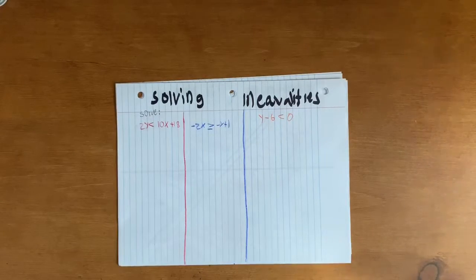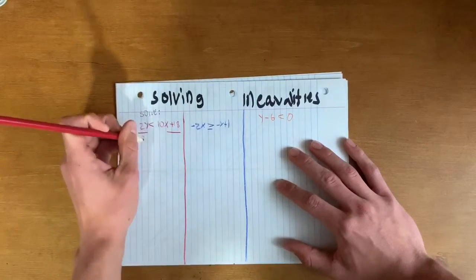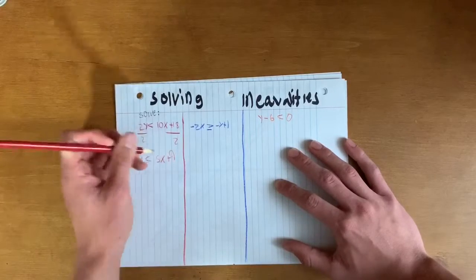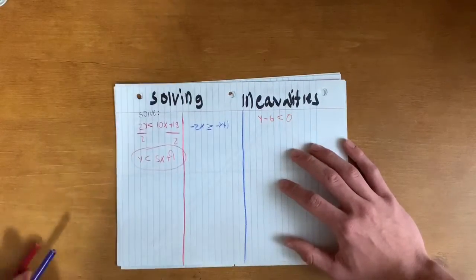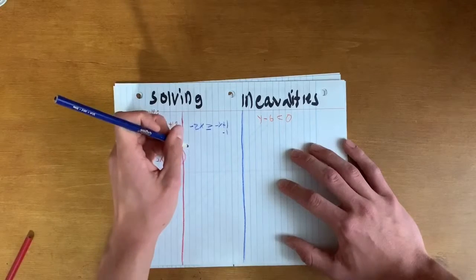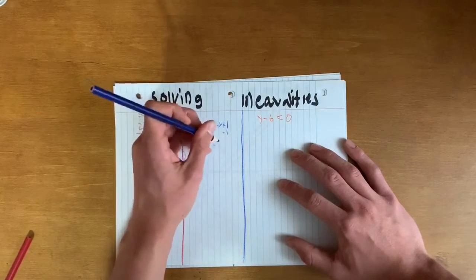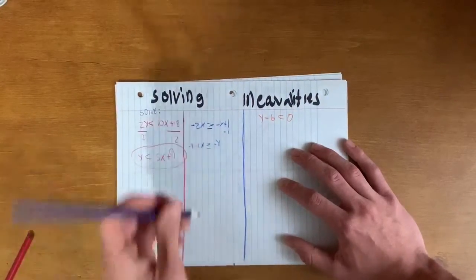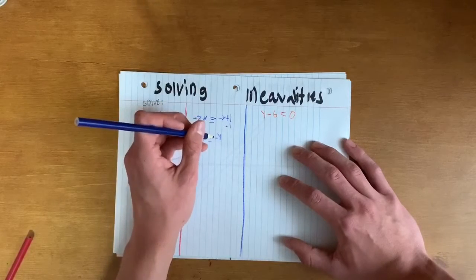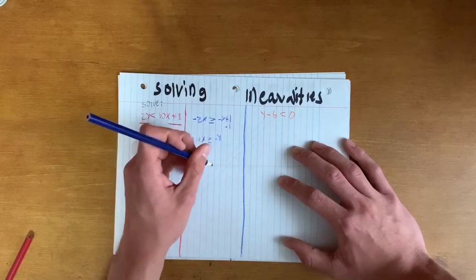First we're going to put these equations into y = mx + b format because they're not already there. For the first one, divide everything by 2 and it becomes y < 5x + 9. For the second one, subtract the 1 over to get negative 1 minus 2x ≥ negative y. Then move the y to the front, making sure the inequality sign faces the same way as y, giving us y ≤ negative 2x minus 1.